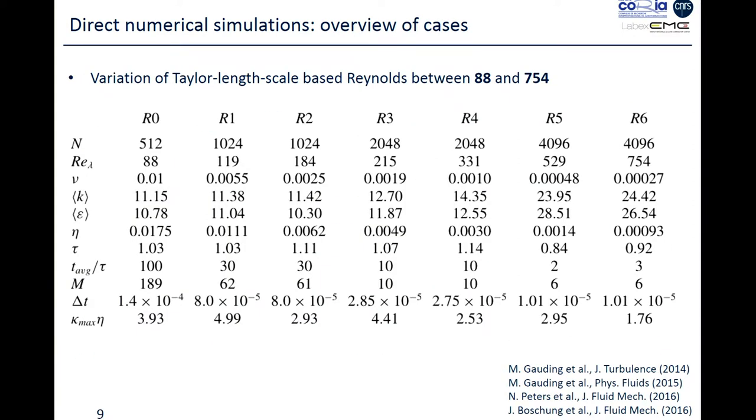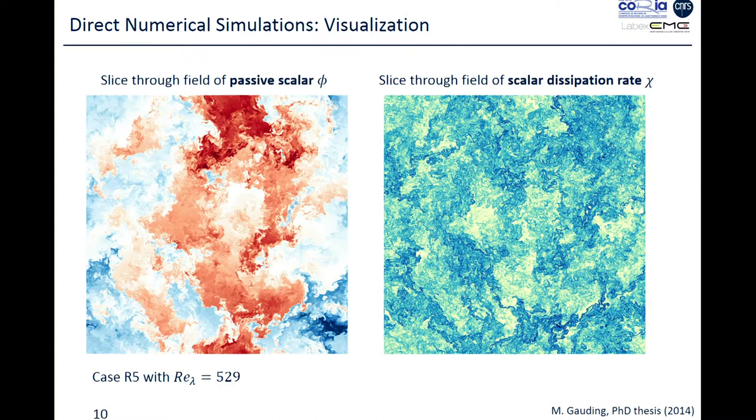This is the range of the Reynolds number we solve for, typically six situations of Reynolds number, ranging R lambda based on the Taylor microscale, ranging between 88 up to 754, and these are all details of the simulations.